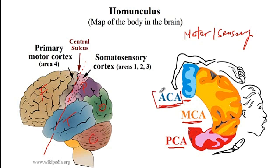If someone has a lesion of the anterior cerebral artery, there would be contralateral paralysis as well as loss of sensation of the leg. Likewise, a lesion of the middle cerebral artery causes contralateral loss of sensation as well as paralysis of the upper extremities and the face. With the posterior cerebral artery there will be a problem with the tongue as well as the pharynx.